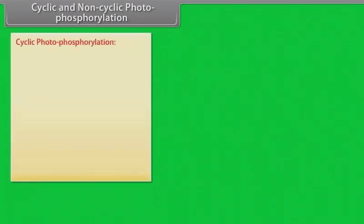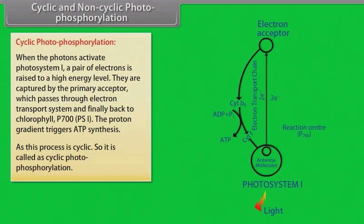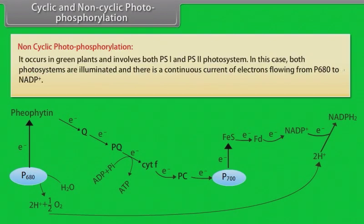In cyclic photophosphorylation, when photons activate Photosystem 1, a pair of electrons is raised to a high energy level, captured by the primary acceptor, passed through the electron transport system, and finally returned to Chlorophyll P700 (PS1). The proton gradient triggers ATP synthesis. Because this process is cyclic, it is called cyclic photophosphorylation. Non-cyclic photophosphorylation occurs in green plants and involves both PS1 and PS2. Both photosystems are illuminated and there is a continuous flow of electrons from P680 to NADP+.